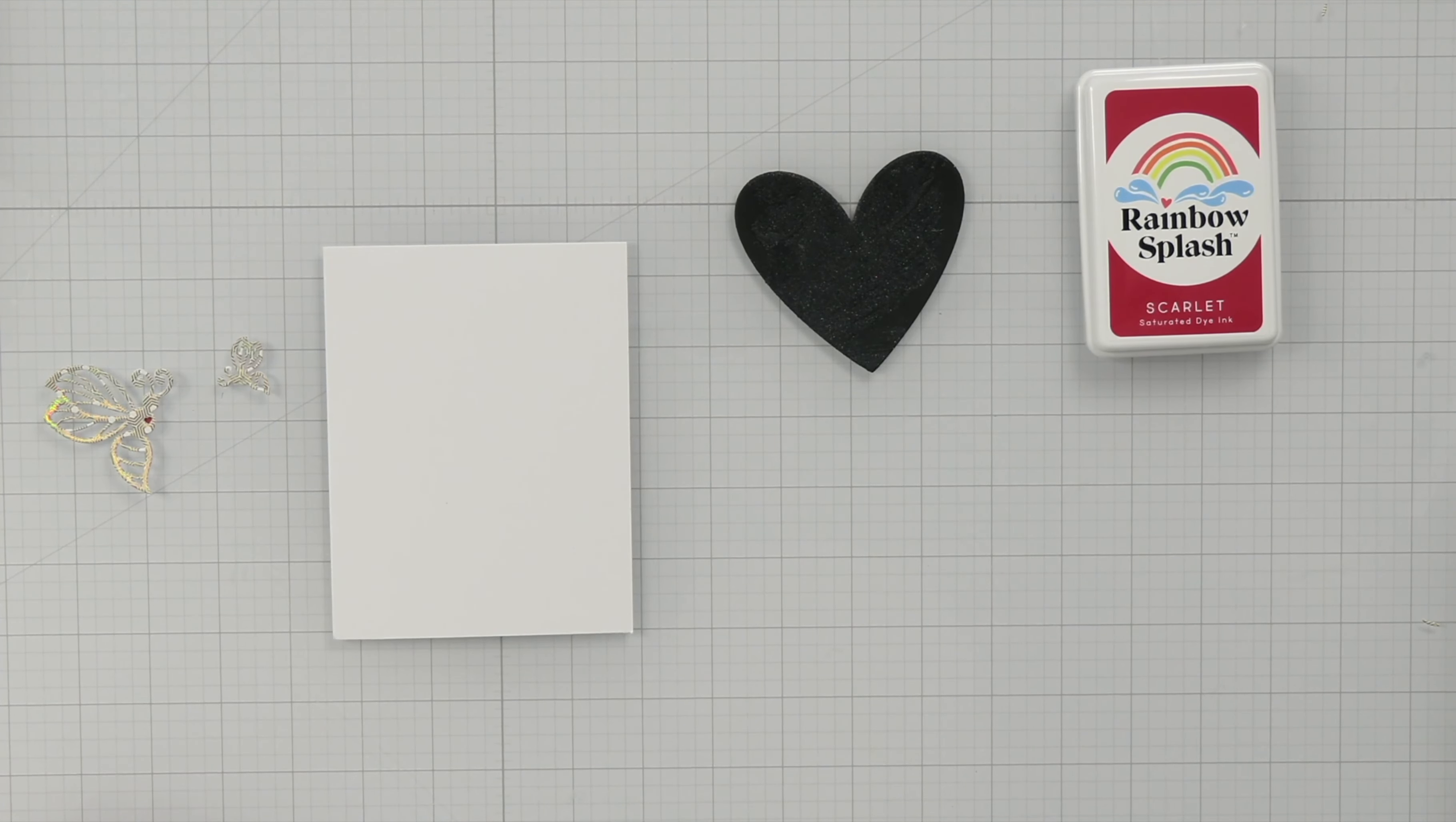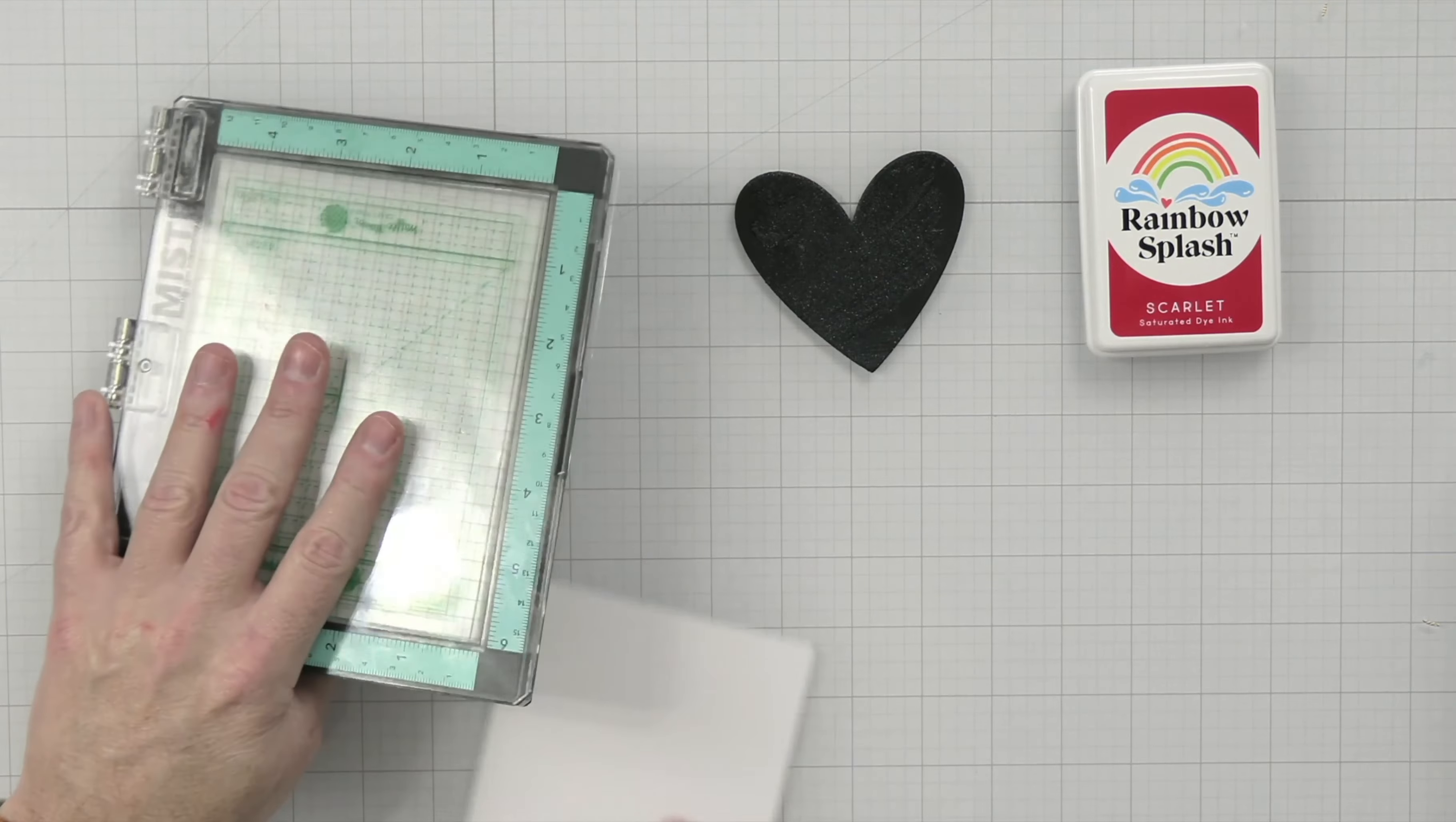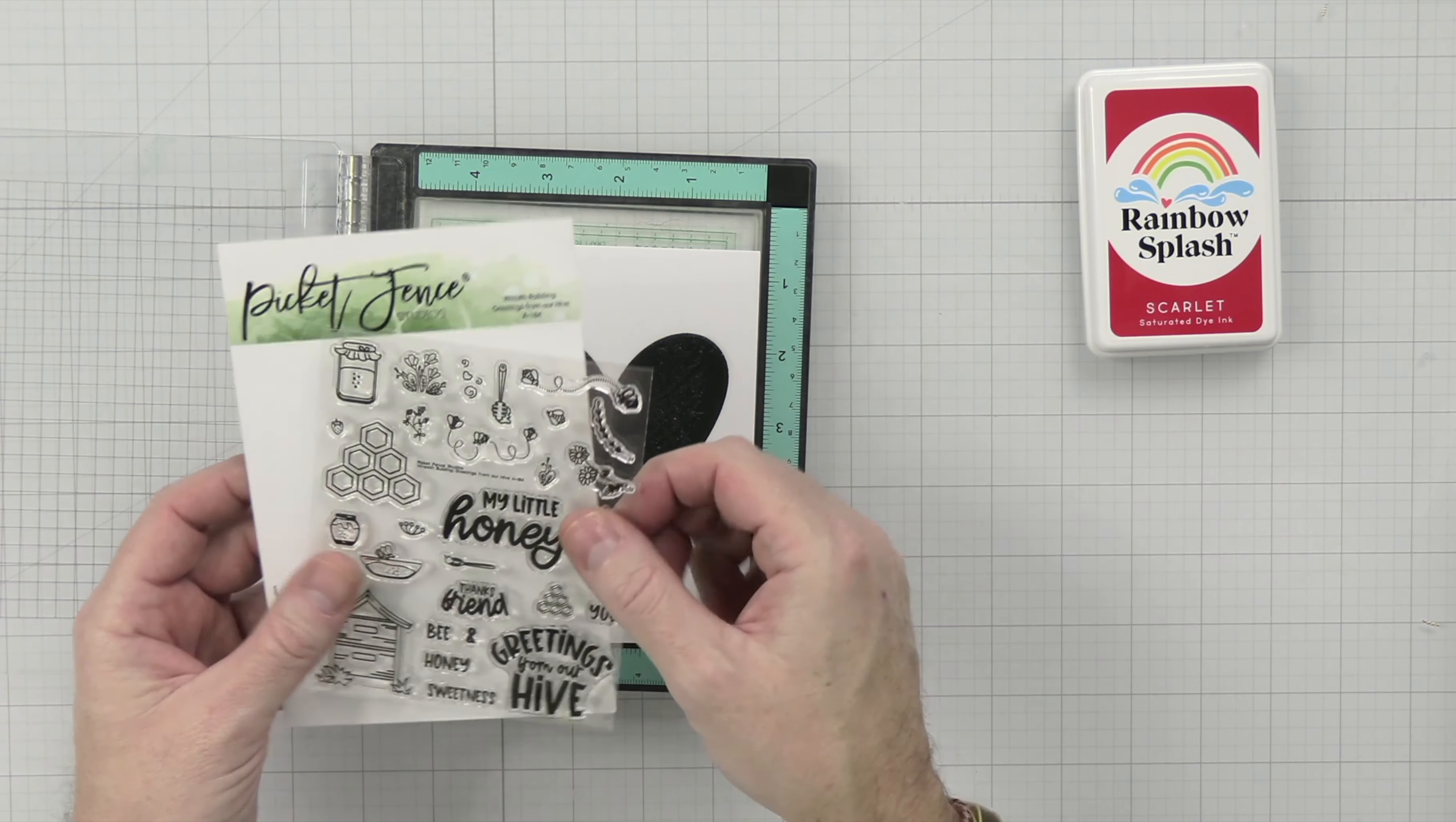We're going to go ahead and start putting this card together. We're going to do some finishing touches. I do have the second card that I'm going to also make, but I'm not going to complete that in this video, but you can check out my Instagram, Bromero Cards, and check out the second card over there. I want to put this here like in the center. And then what I want to do is use a sentiment from the Wreath Building Greetings from Our Hive.